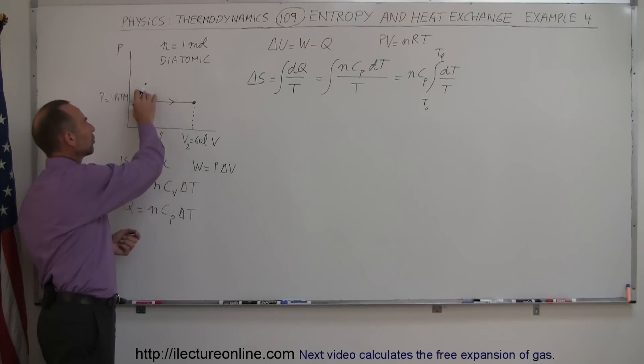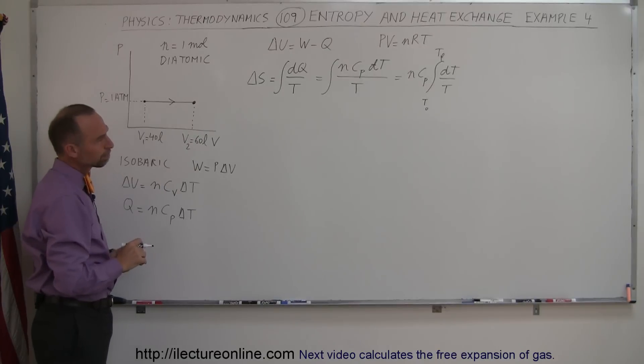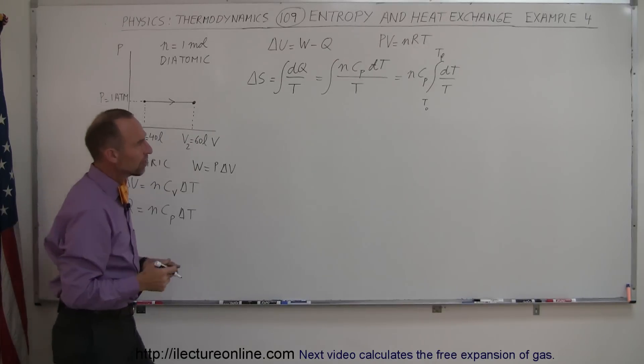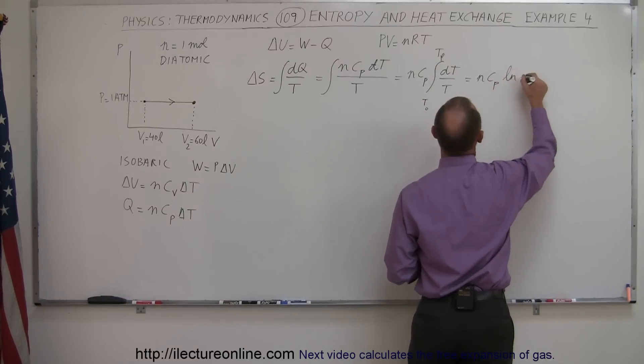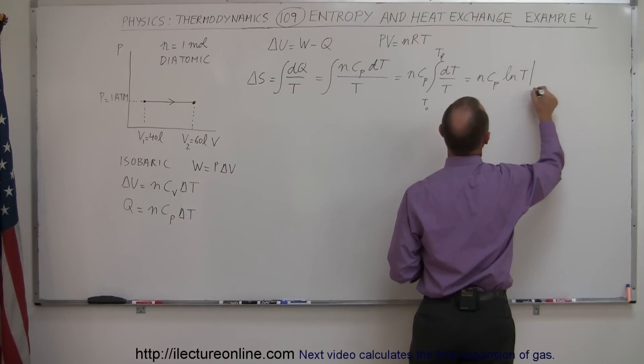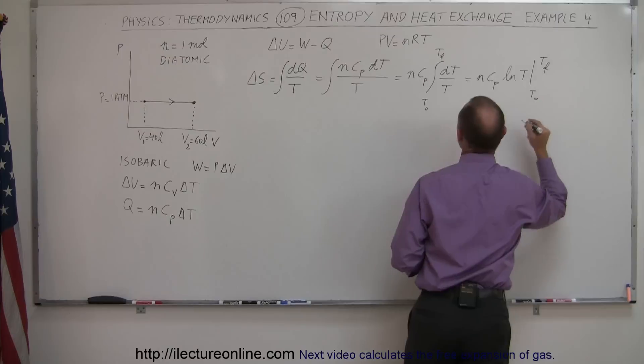We need to then figure out what the temperatures are here, we'll do that in just a moment. Let's go ahead and continue with this equation. So this is equal to N C_P times the natural log of the temperature from T initial to T final.